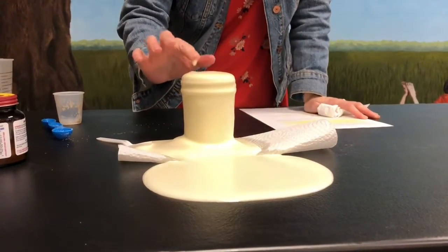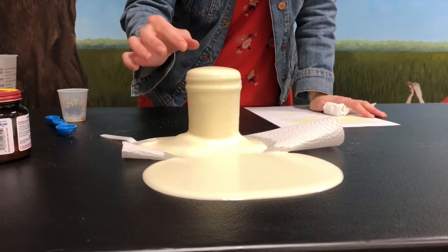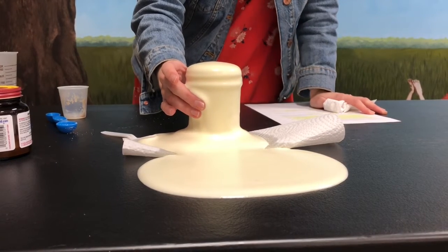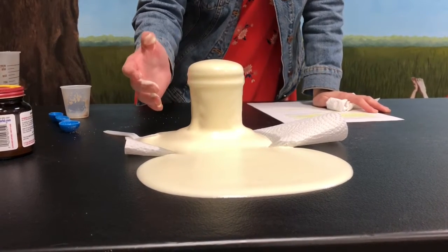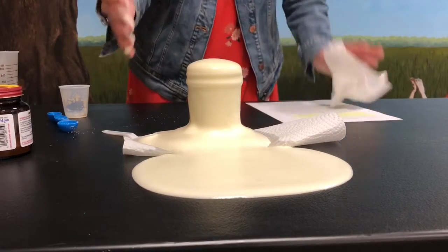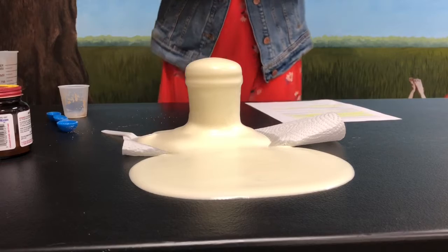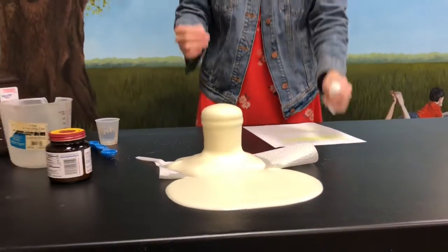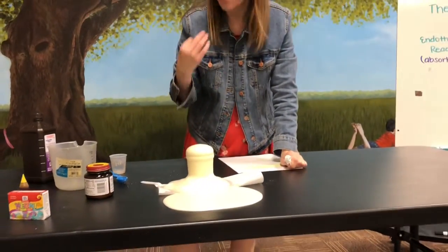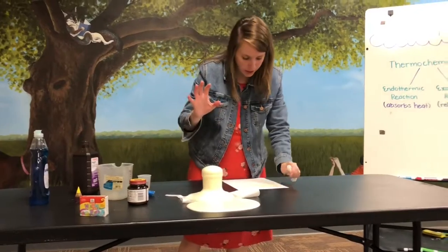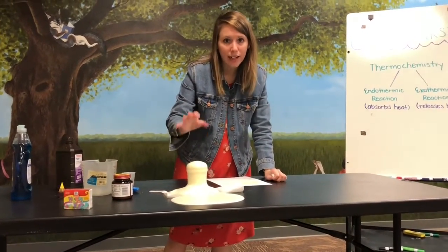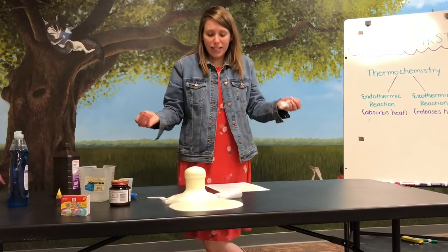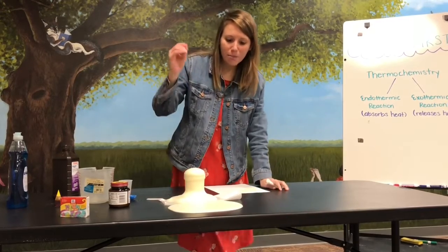If I touch it, it feels really cool — almost like a plastic foam. The glass is actually warm. Because the chemicals we used weren't super fancy science chemicals, the reaction isn't going to be extremely hot, but our glass is significantly warmer than before. The hydrogen peroxide and the yeast specifically create an exothermic reaction that releases heat.